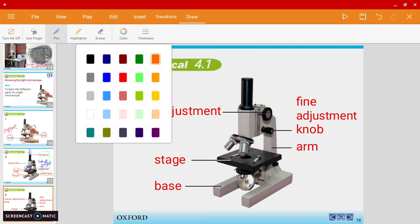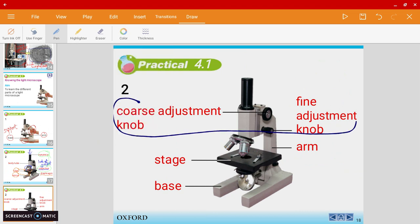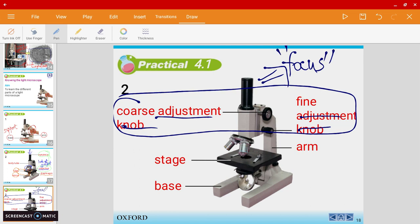You also have two adjustment knobs that help us focus on the object. Think about it like your camera—when you take a picture, you tap on the screen to help it focus. The adjustment knobs help us do the same thing. Then you have a stage where you place the object. Actually, you place the object on a slide, and this is where the slide goes on the stage.